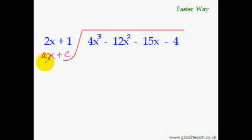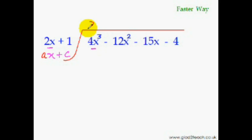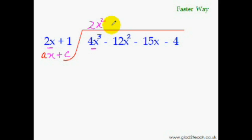The method will remain almost the same — it's just that one little extra step is going to get added. So like you always do, divide the first term of the dividend by the first term of the divisor to get the first term of the answer. 4X³ divided by 2X will give us 2X². Divide the number part by the number part and the variable part by the variable part: 4 divided by 2 is 2, and X³ divided by X is X².